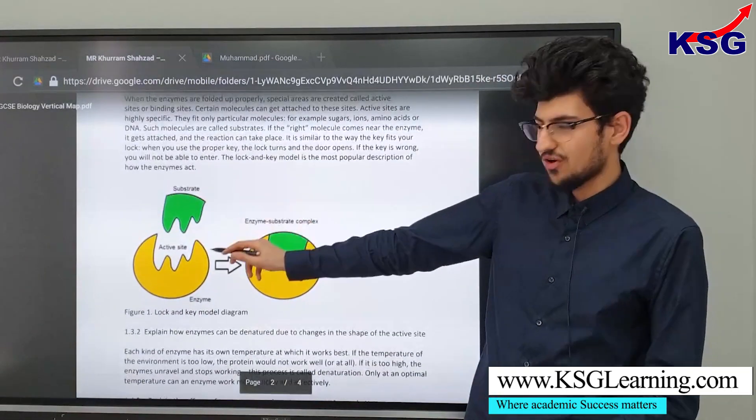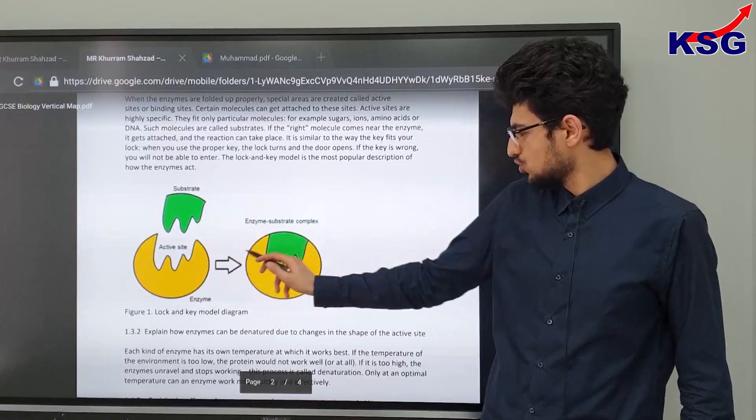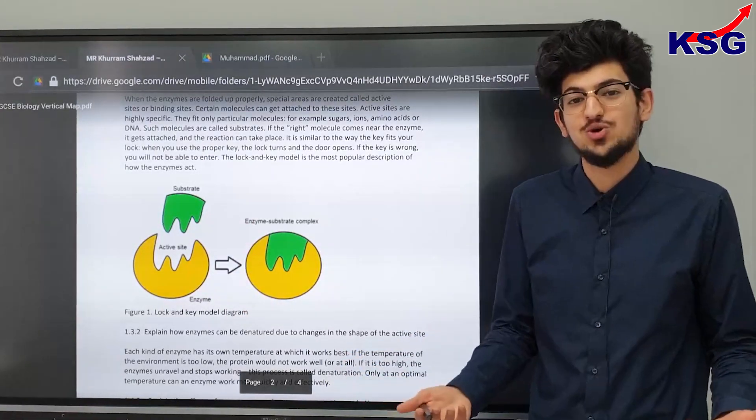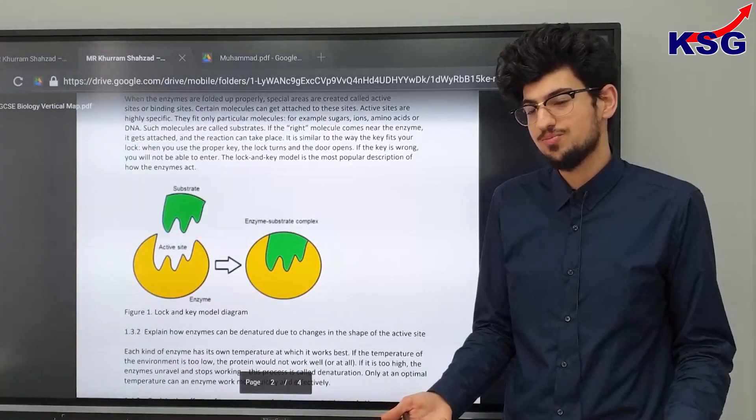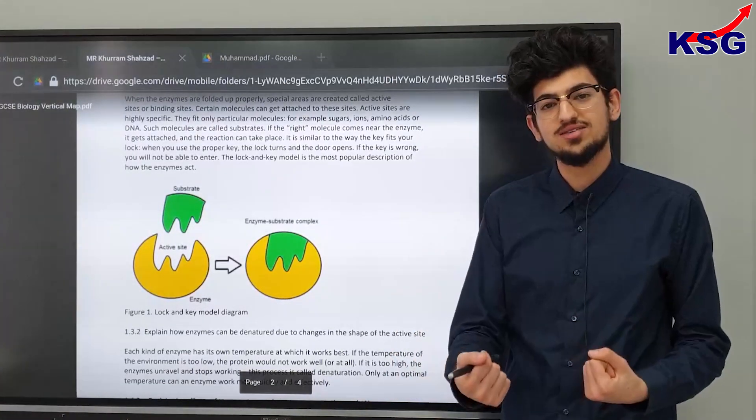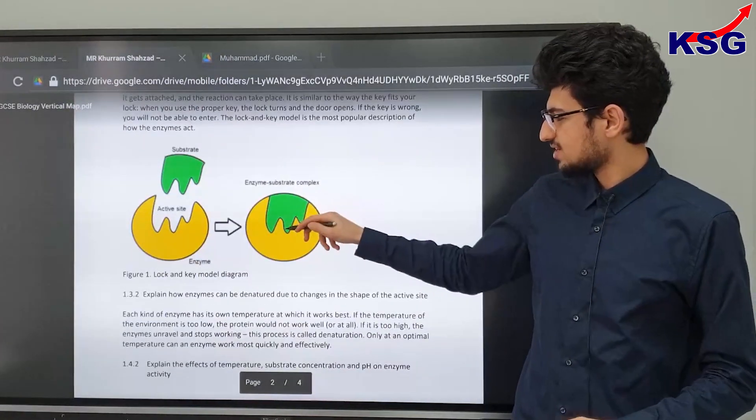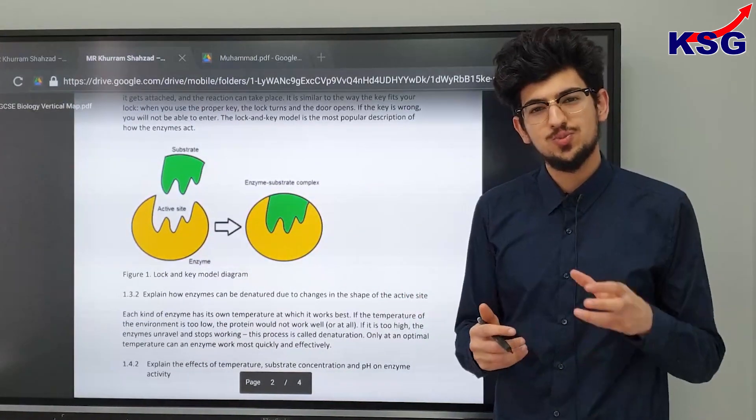So glucose might be a perfect fit for our enzyme here and it will join into it sort of like a lock and key and for that reason we actually call this the lock and key model because the substrate is perfectly fit for the enzyme. Once it fits in it's able to speed up the rate of reaction.